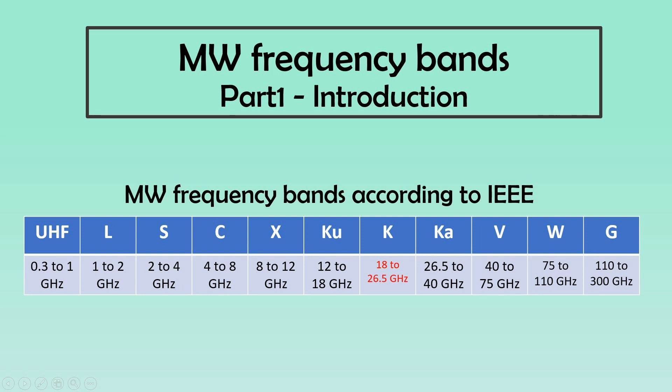At this point, I would like to mention that K band is not a very useful frequency for communication, as these frequencies can be easily absorbed by water vapor present in the atmosphere. So we won't be talking much about this band.